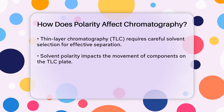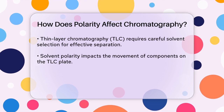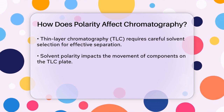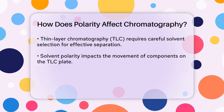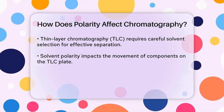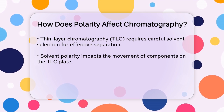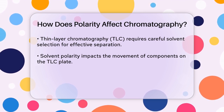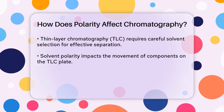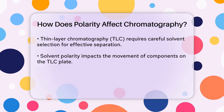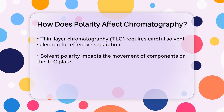In thin layer chromatography, or TLC, the choice of solvent is critical. The polarity of the solvent affects how quickly the components of the mixture move up the TLC plate. If the solvent is too polar, the components may not separate properly, and if it's too nonpolar, they might not move at all. For instance, if the RF value — a measure of how far a substance moves up the plate — is 1, it means the solvent is too polar and you need to decrease its polarity. Conversely, if the RF value is 0, the solvent is too nonpolar and you need to increase its polarity.